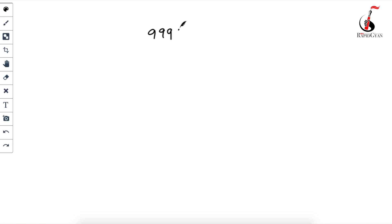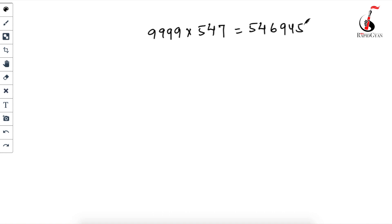Hello everyone, welcome to Rapid Guyon. I suggest you pause the video, take out your calculator, and find the answer of 9999 × 547. Do it fast. The answer is 5,469,453. You can check it with your calculator.